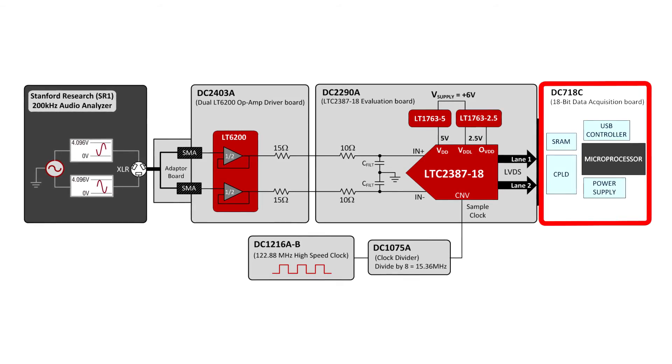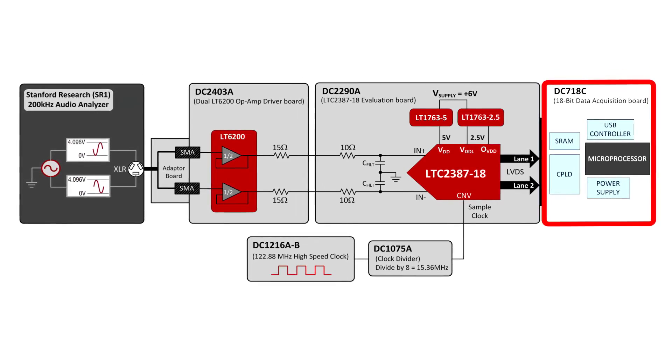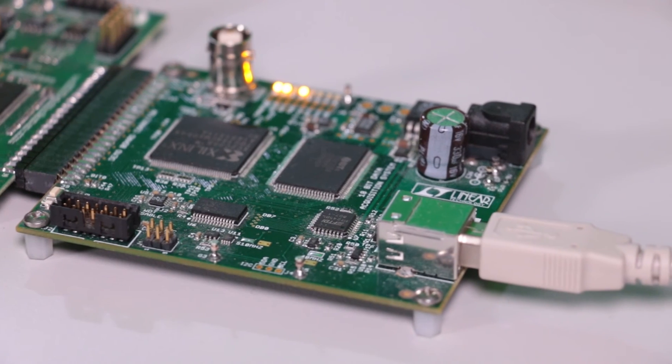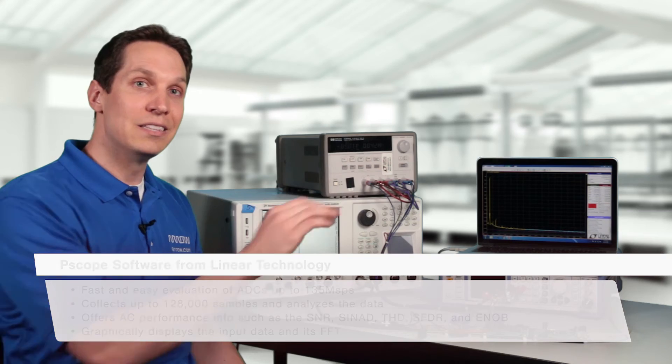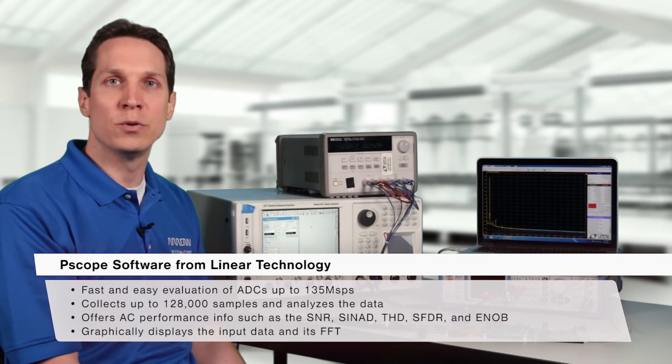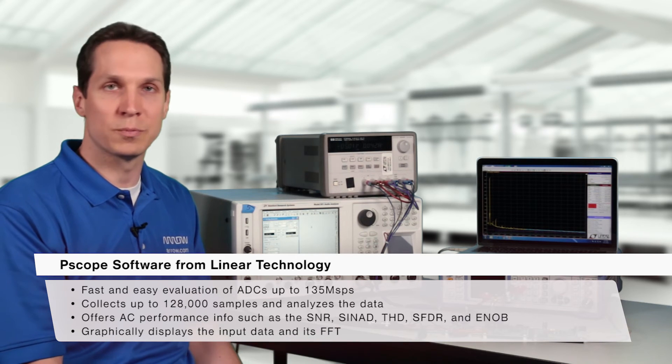The DC-718C, along with PScope software from Linear Technology, provides a USB-based Windows PC-hosted data acquisition system. This software provides a fast and easy evaluation of ADCs up to 135 mega-samples per second.